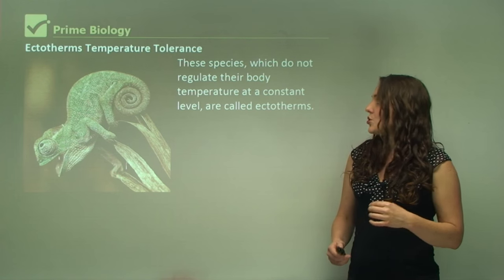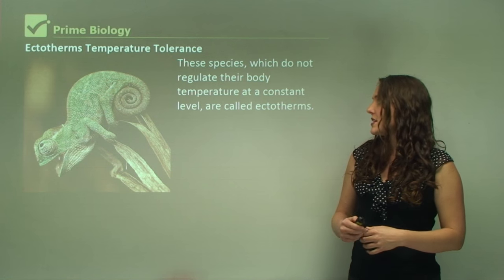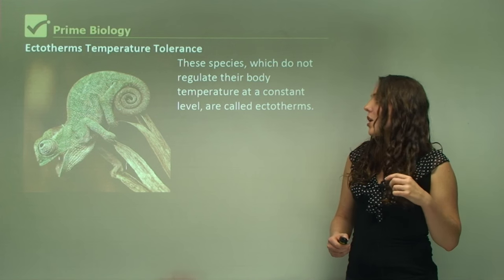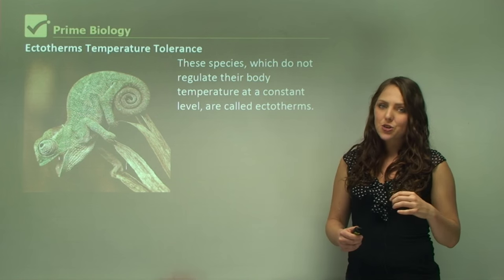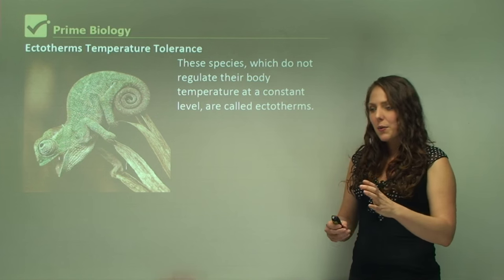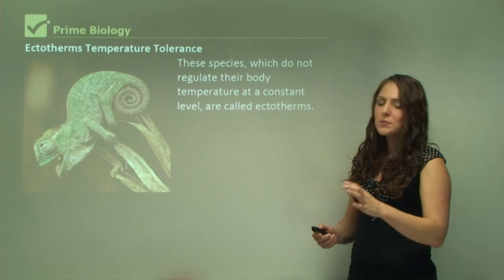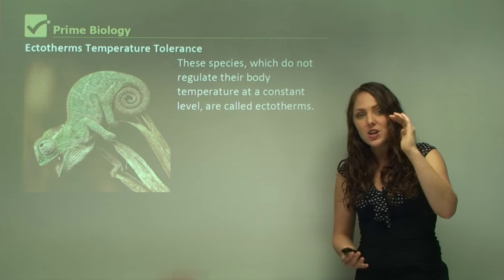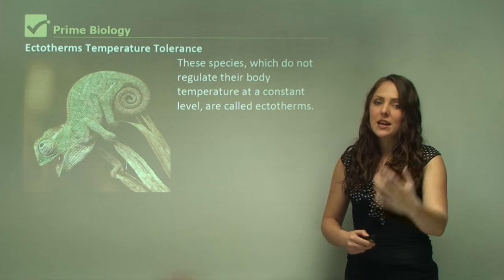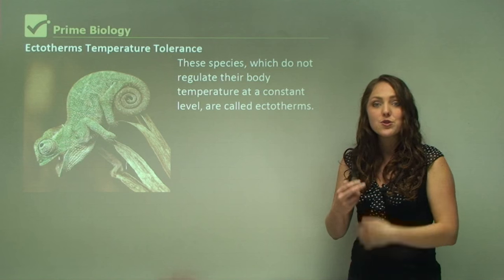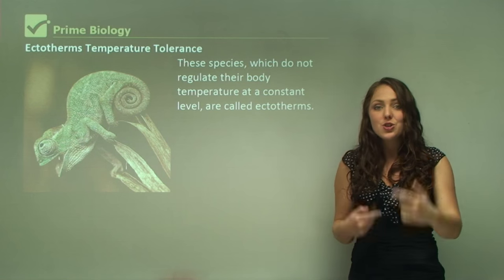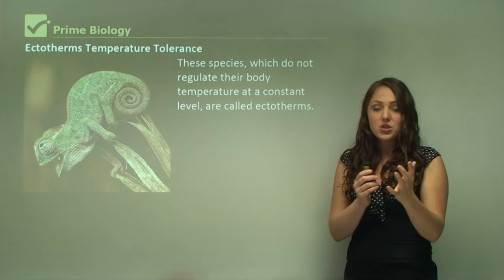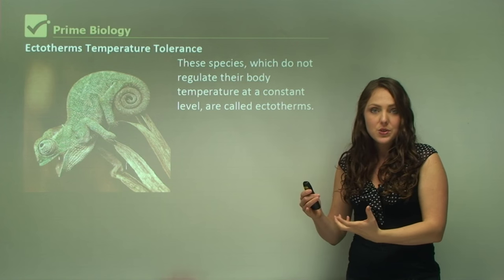Species which do not regulate their body temperature at a constant level are called ectotherms. Ectotherms can live within a wider range of temperatures than endotherms, because endotherms have to regulate their internal environment to maintain a certain temperature.